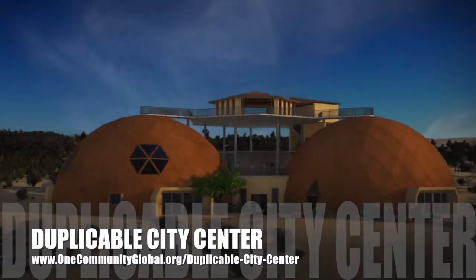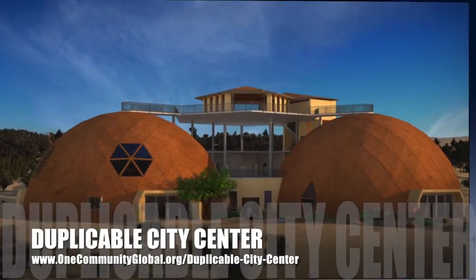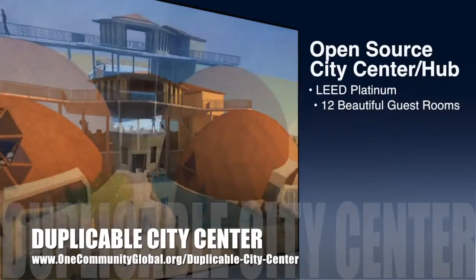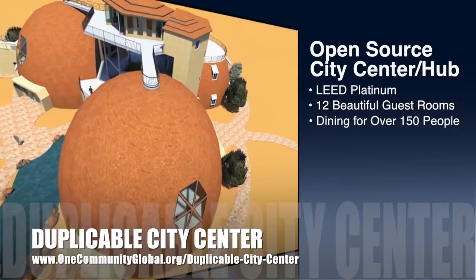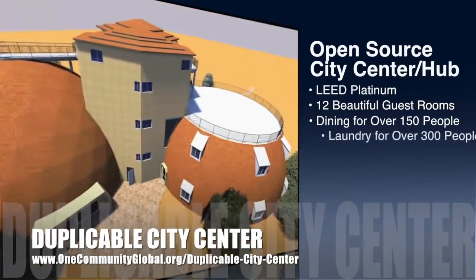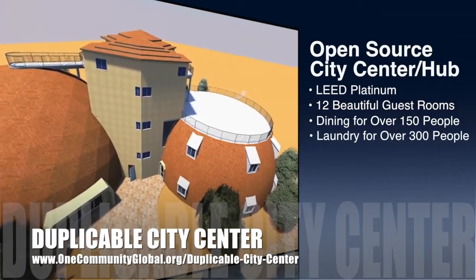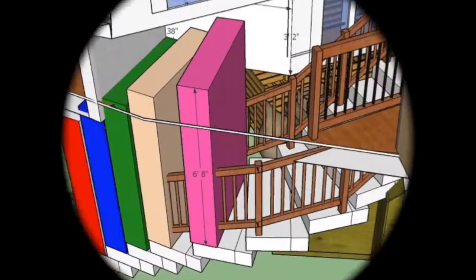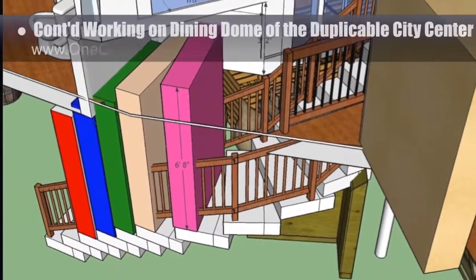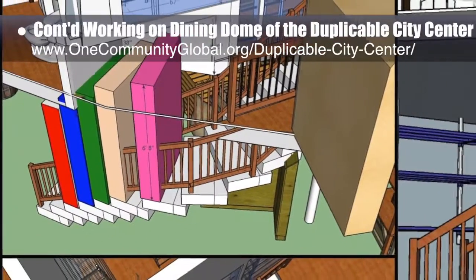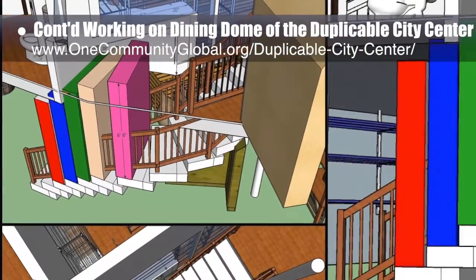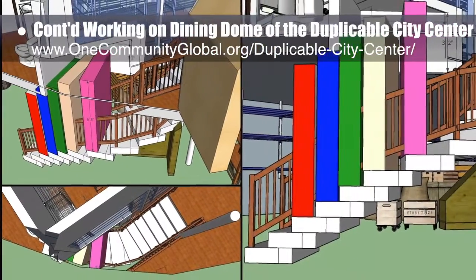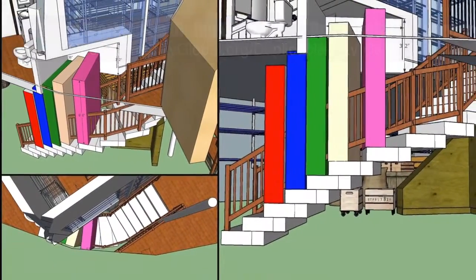One Community is also creating an open source duplicable city center. It is designed to be LEED Platinum certified, provide 12 guest rooms, dining for over 150 people, and laundry and recreation space for over 300 people, all while saving money, time, space, and resources. This week, the core team continued working on the dining dome of the duplicable city center, fixing headroom clearance issues for the root cellar access that required changes to the adjacent dry storage and bathrooms.